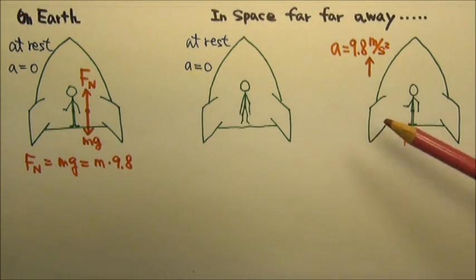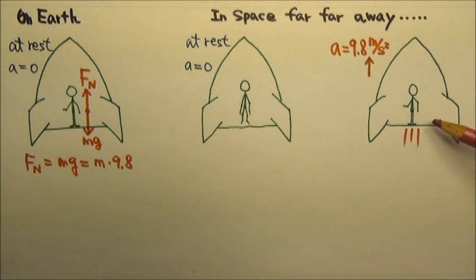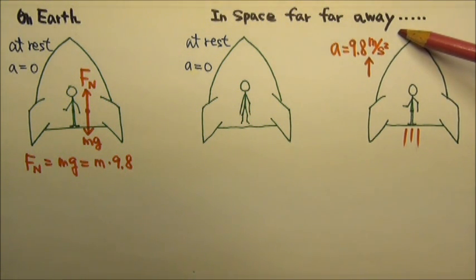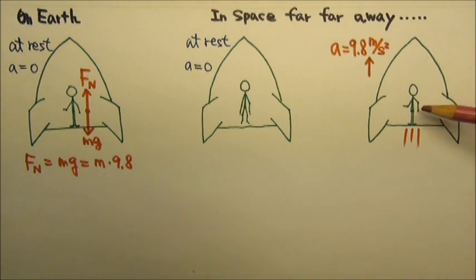Then let's imagine that we turn on the rocket engine, so the rocket accelerates that way at the rate of 9.8 meters per second squared. The person's feet would be on the floor. Now see if you can find the person's apparent weight.